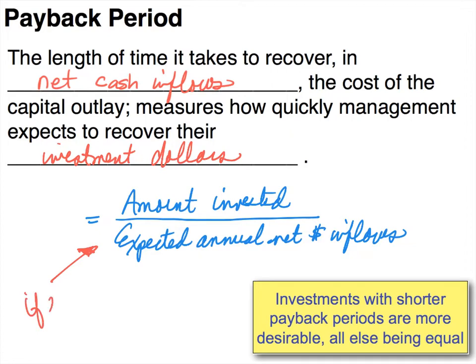One important thing about this equation is that it can only be used if there are equal payments — in other words, those expected annual net cash inflows are equal. With the payback period, the shorter the payback period, the better. For example, if a piece of equipment is expected to last 10 years and the payback period calculates to 6 years, it has paid itself back in less time than its useful life — making it a good investment.